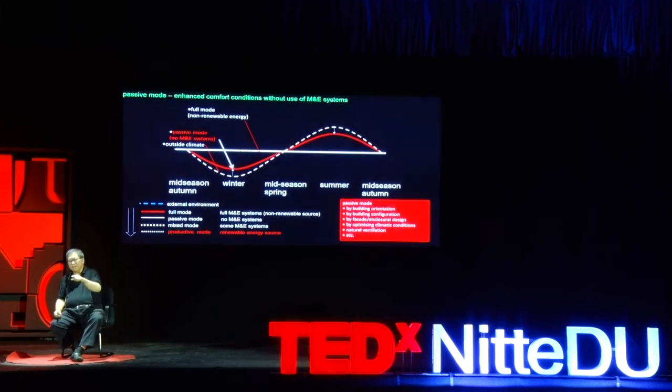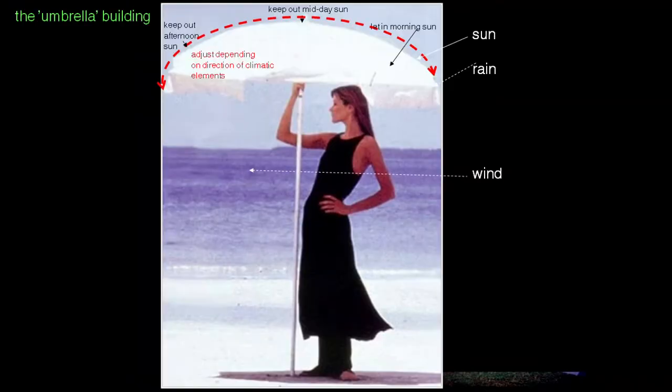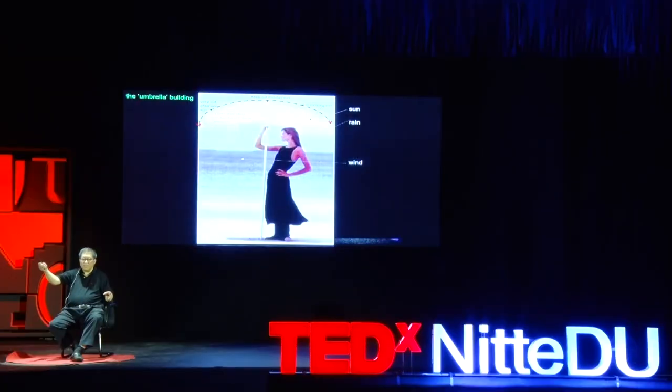If we adopt techniques called bioclimatic techniques, we can actually improve the comfort condition shown in the red line without any technology, without any mechanical or electrical systems. The idea is what I call an umbrella architecture. An umbrella is an incredible cybernetic device — depending on the direction of wind, rain, or sun, you can angle or direct it to keep out rain, wind, and sun to make yourself comfortable. My dream is to build an automated umbrella building, though I haven't been able to do that yet. So I started a series of experiments with what I call umbrella buildings.